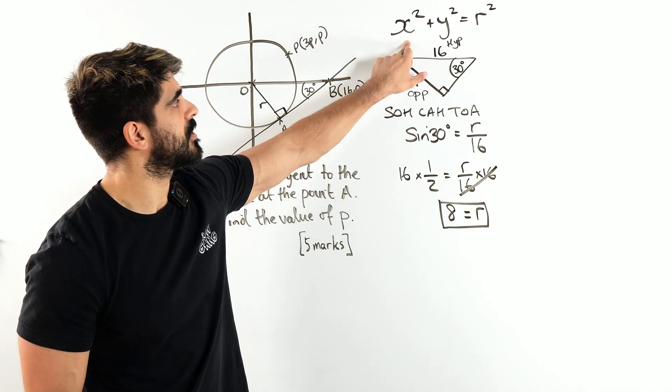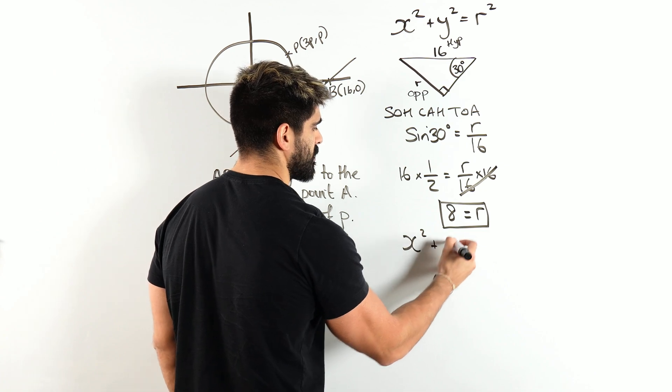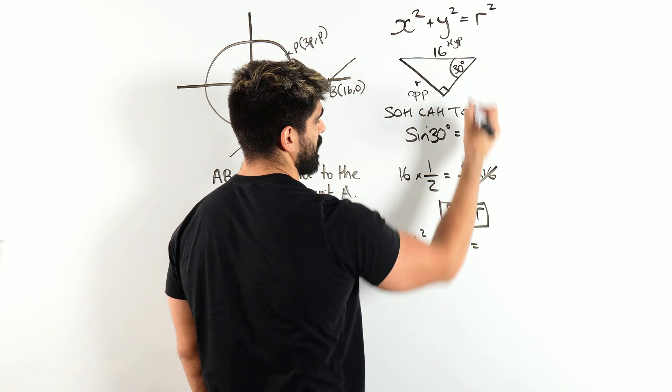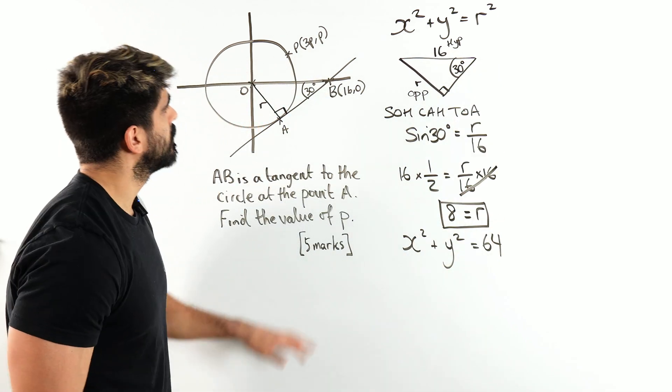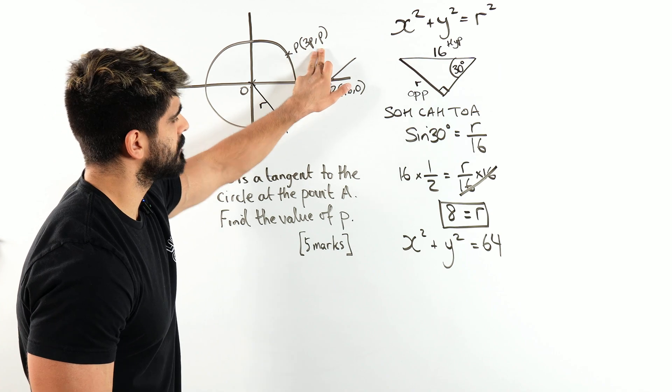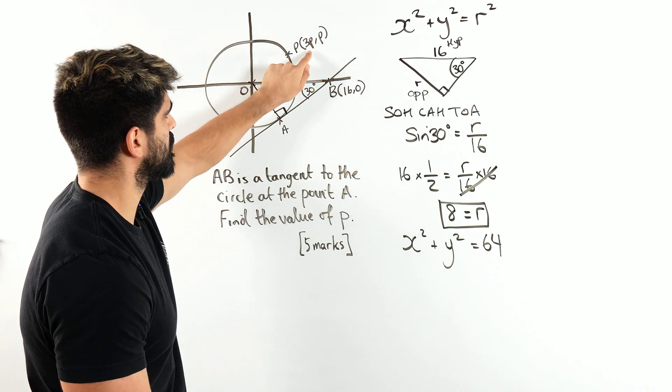Now we know the equation of the circle. It's x squared plus y squared equals the radius squared. 8 squared is 64. Now, these coordinates must satisfy this equation because it lies on the circle. So let's sub it in.